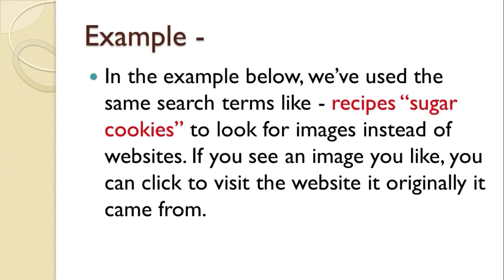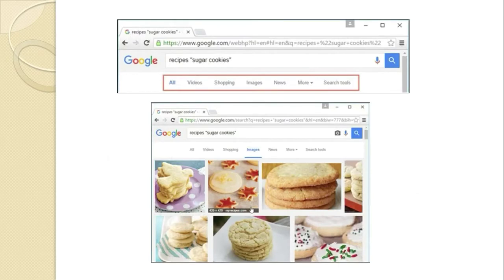We'll understand this with one example. We have used the same search terms like 'recipe, sugar cookies' to look for images instead of websites. If you see an image you like, you can click to visit the website it originally came from. Here you can see the search results for 'recipes, sugar cookies' image search.